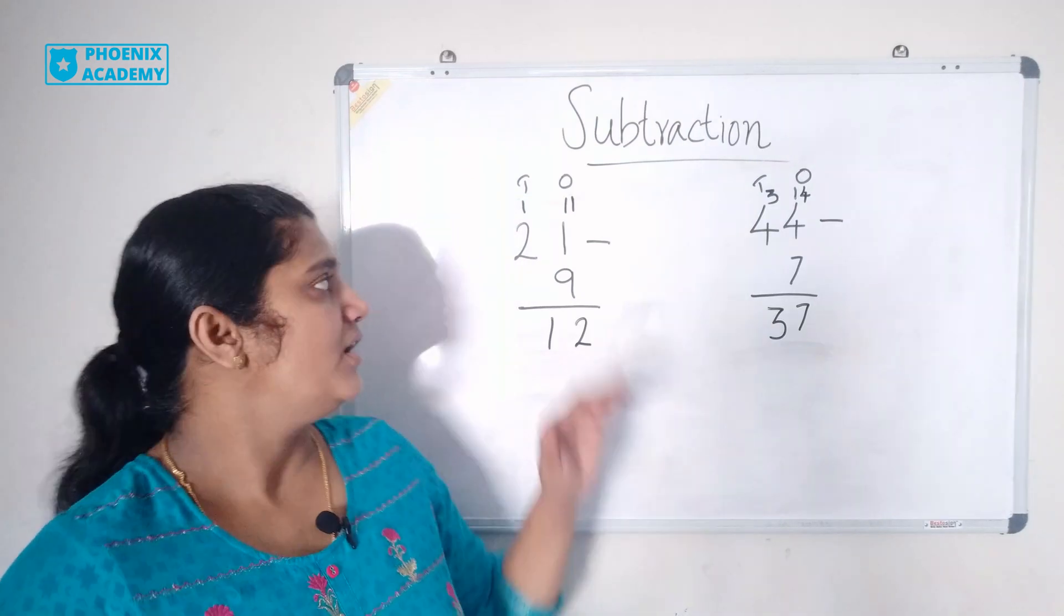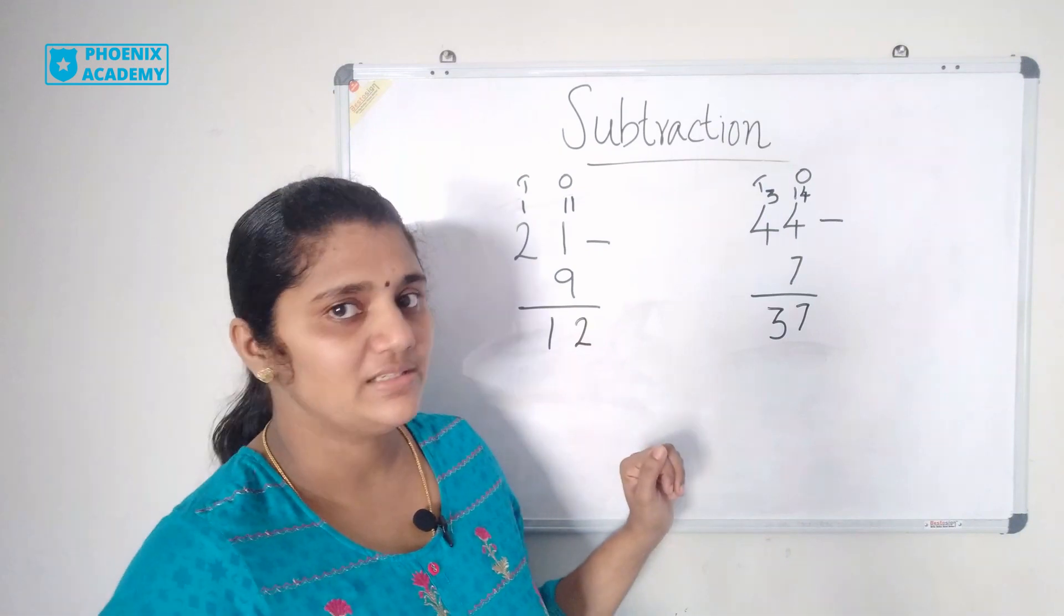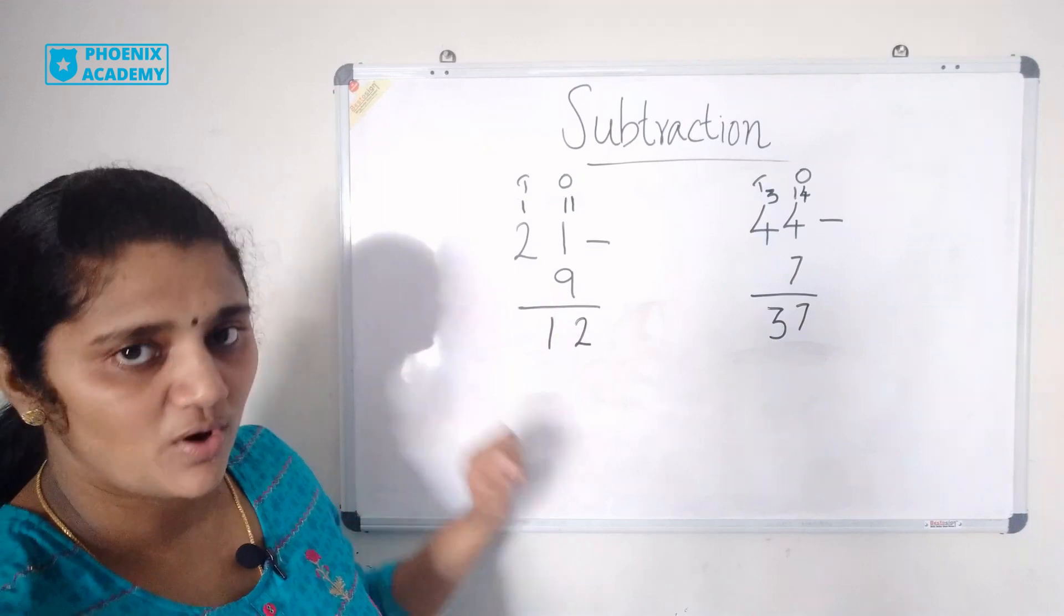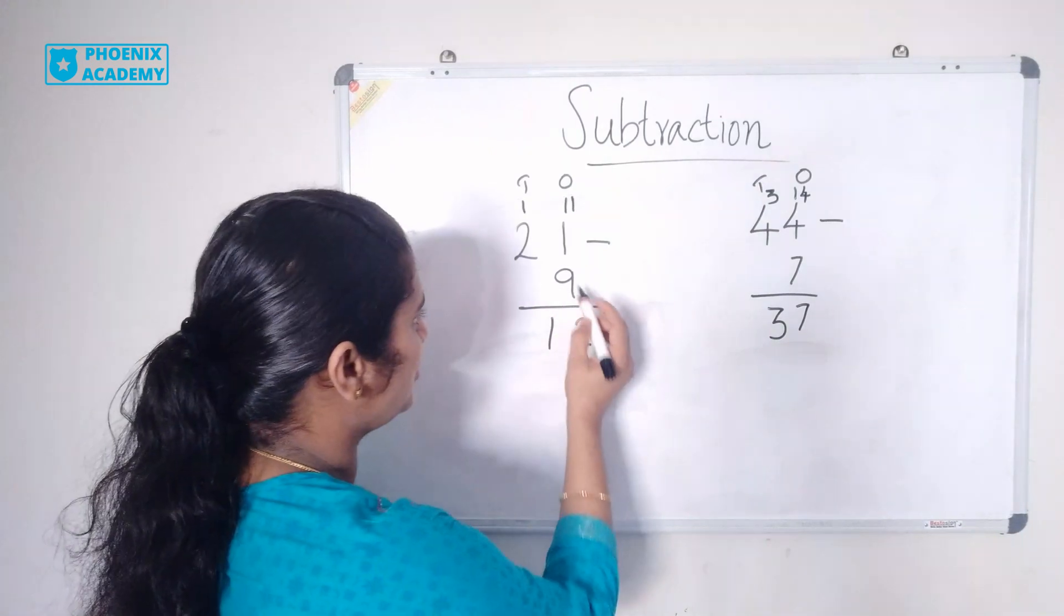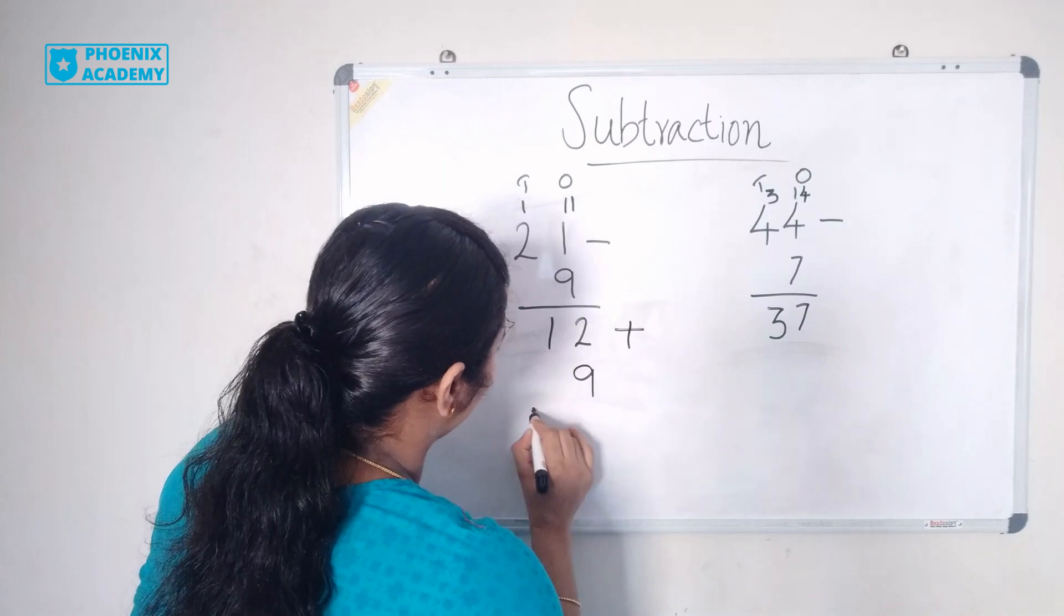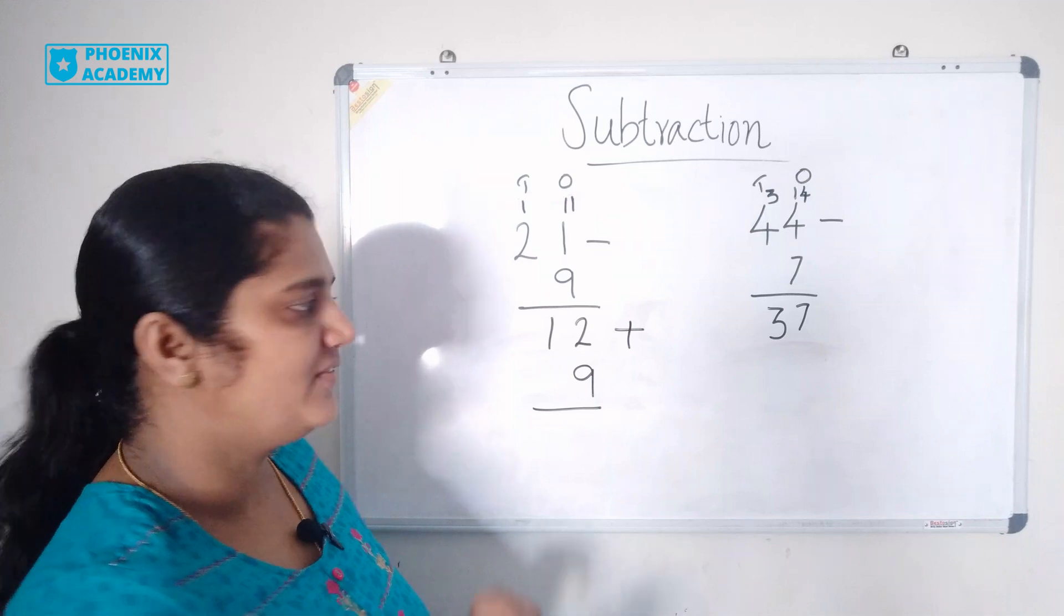How can you check your result is correct or not? To check your result, you can add this difference to the smaller number. That is 12 plus 9. 2 plus 9 is 11.